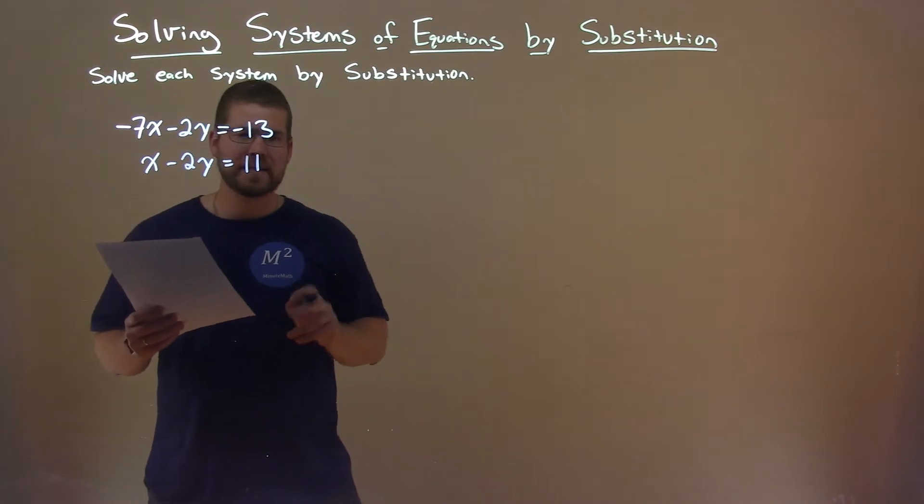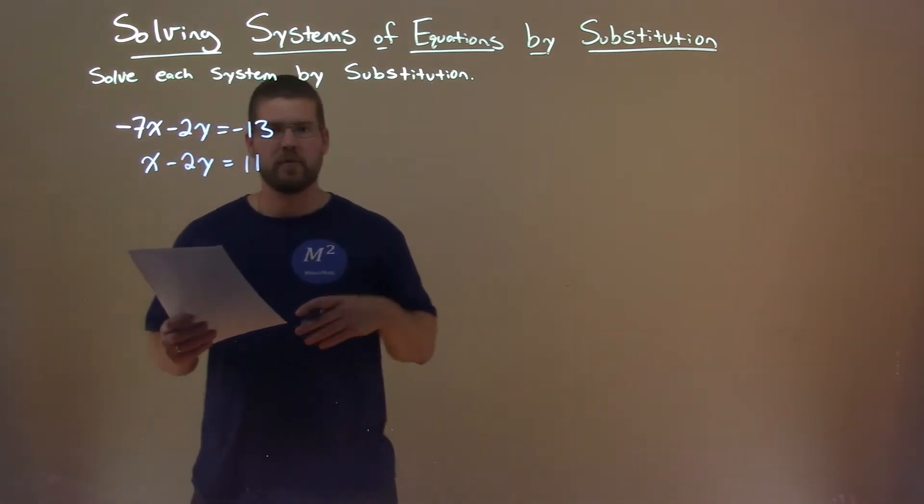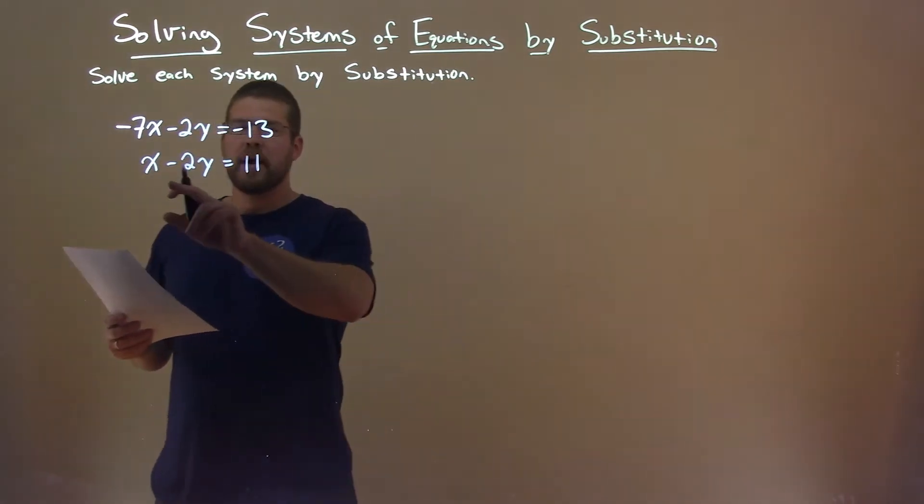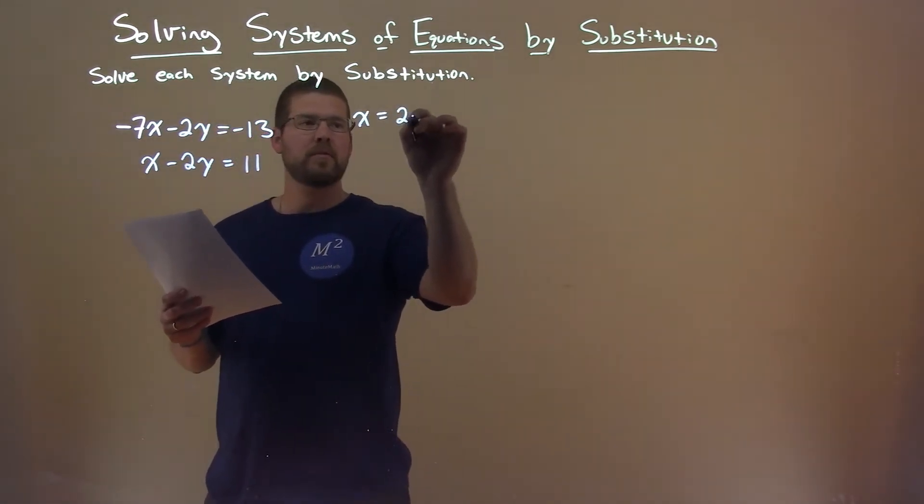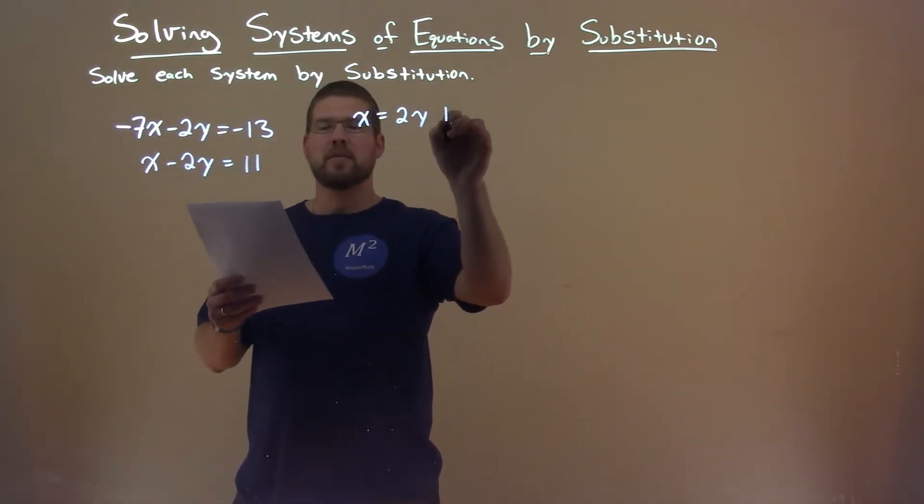The second equation, I can see I can get the variable x by itself fairly easily. By adding 2y to both sides, I'm left with x equals positive 2y plus 11.